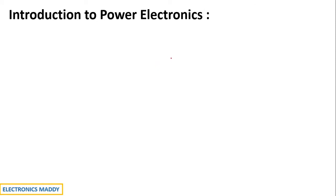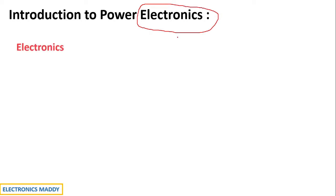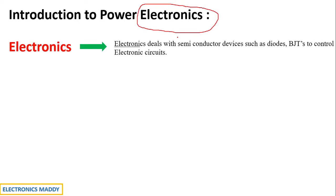In order to understand power electronics, we need to first understand what electronics is associated with. Electronics basically deals with semiconductor devices such as diodes and BJTs to control electronic circuits.